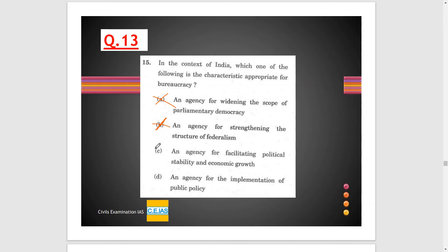Option C — an agency for facilitating political stability and economic growth — why would bureaucracy talk about political stability? Many times in India, governments change and the bureaucracy remains the same. So it is not about political stability. Option D is the correct option — an agency for implementation of public policy. The main role and appropriate characteristic feature of bureaucracy is to implement the policies framed by our parliament.